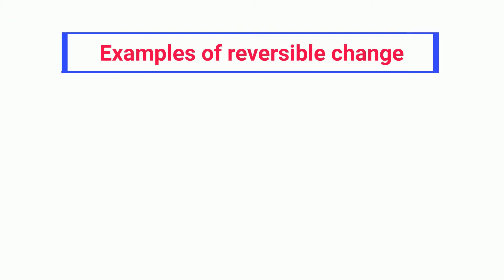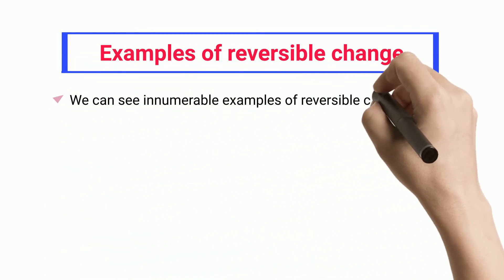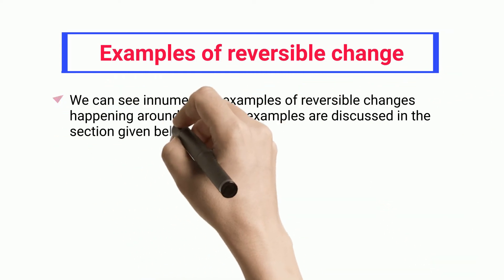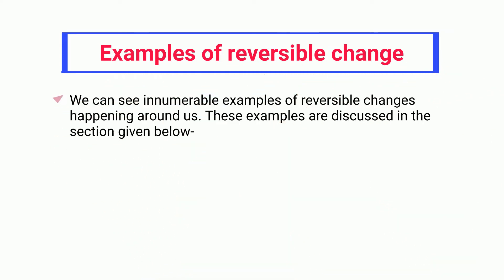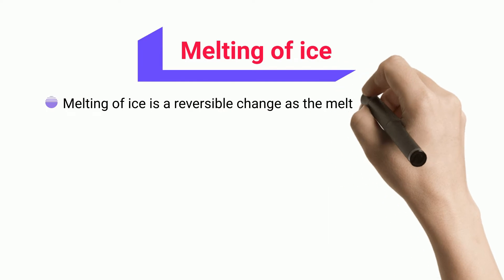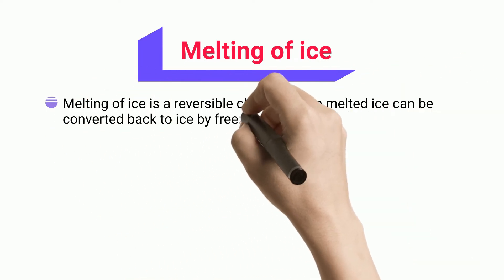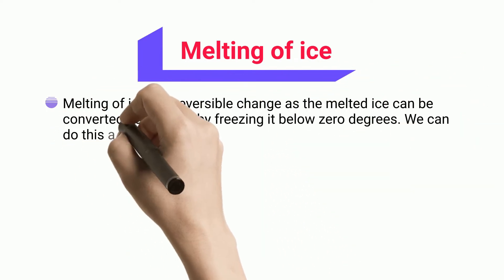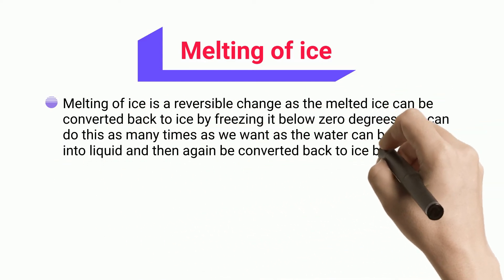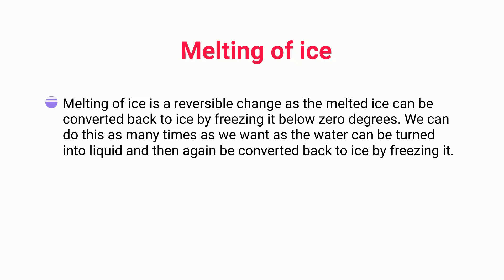Examples of Reversible Change. We can see innumerable examples of reversible changes happening around us. Melting of Ice: melting of ice is a reversible change as the melted ice can be converted back to ice by freezing it below 0 degrees. We can do this as many times as we want, as the water can be turned into liquid and then again be converted back to ice by freezing it.